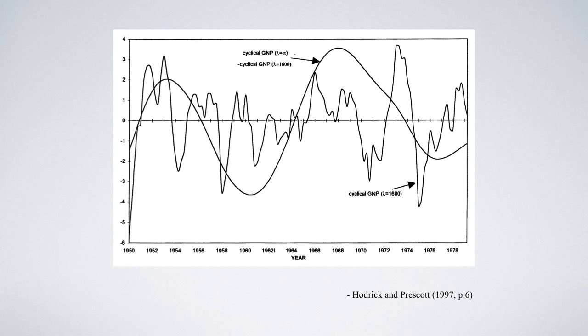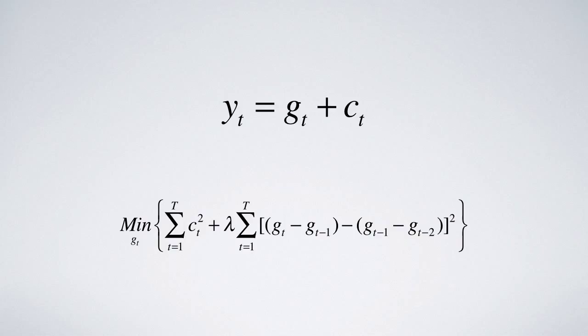Hodrick and Prescott have come up with a mechanism to decompose a data series into a growth and a cyclical component. The first equation here is their intention: growth and cycle.